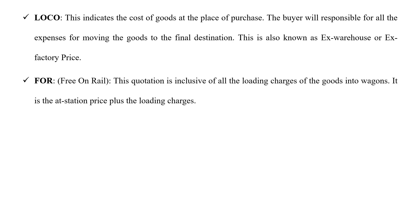The second type is FOR, or free on rail. This quotation is inclusive of all the loading charges of the goods into wagons. It is the at-station price plus the loading charges. When you say free on rail, it includes the price of the goods as well as transportation charges into the wagons. That is why it is called free on rail.